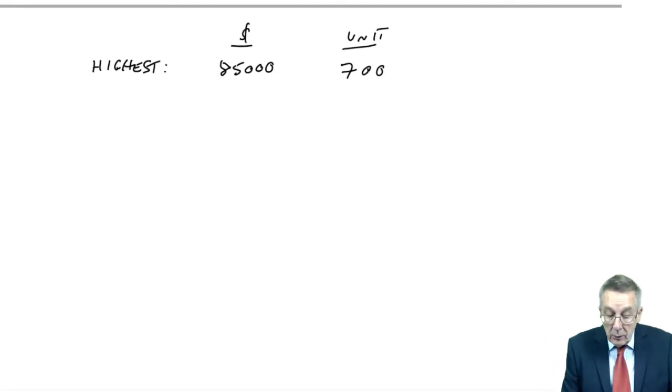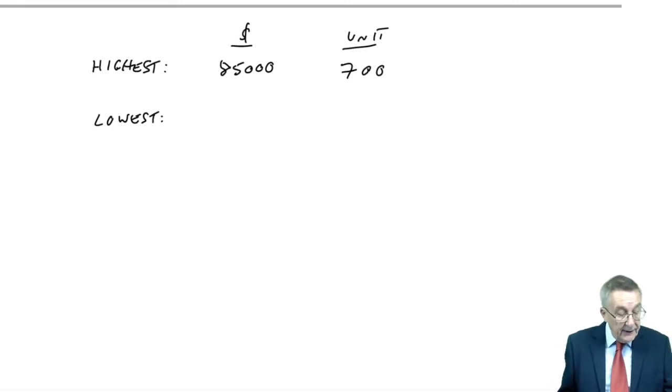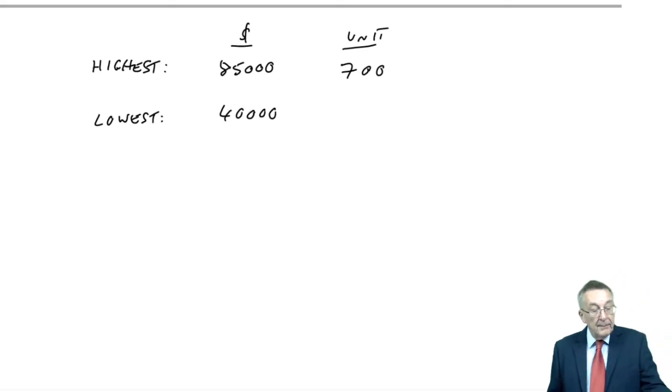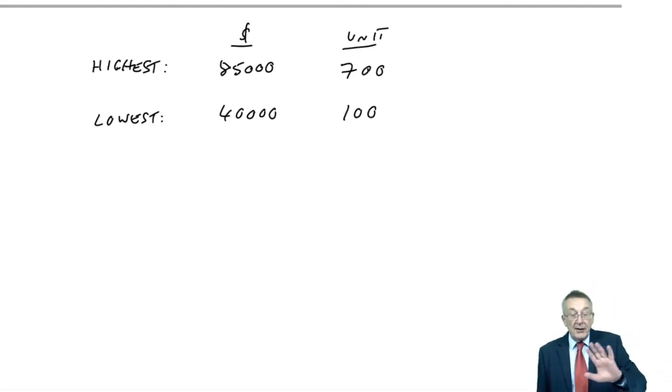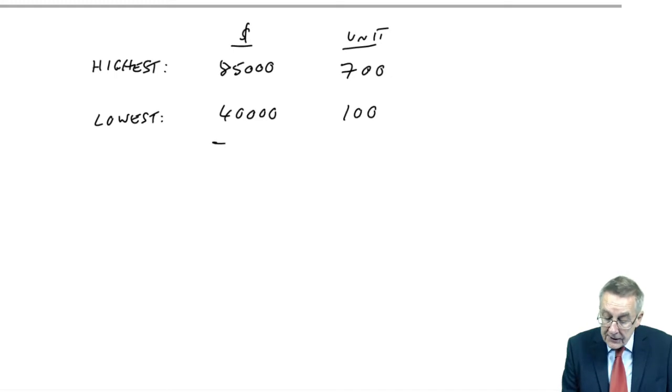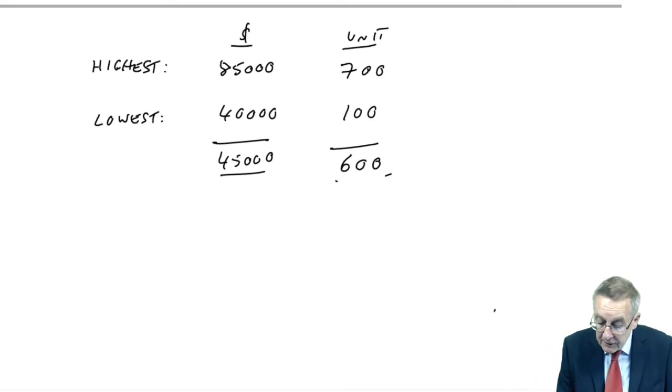We then look again and say, which one was the lowest? And so again, the lowest cost from those seven months, the lowest one is 40,000. And what was the output? That was for 100 units. So we just hit the highest and the lowest. And we then say, well, why is the cost different? The cost of the highest is higher by 45,000. Why is it higher? Any fixed cost will have been the same in both months. It's higher because of the extra variable cost of producing an extra 600 units.